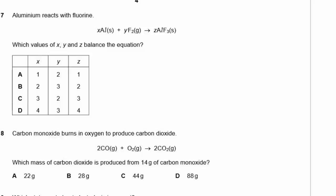Question 7. Aluminium reacts with fluorine. Which values of X, Y, and Z balance the equation? In the products we have three fluorine atoms; in the reactants we have two fluorine atoms. So we swap them: Y = 3, Z = 2, because 3 × 2 = 6 and 2 × 3 = 6. If there are two aluminiums in the products, there must be two aluminiums in the reactants. So the answer is X = 2, Y = 3, Z = 2, which is letter B.